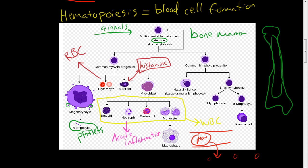The other side of the hematopoietic stem cell produces the common lymphoid progenitor. This lymphoid progenitor can turn into a natural killer cell — kind of like an assassin or secret agent that will go and destroy cells on its own. It's on a mission to destroy anything that's not part of you. We'll talk more about natural killer cells when we cover the immune system in general.